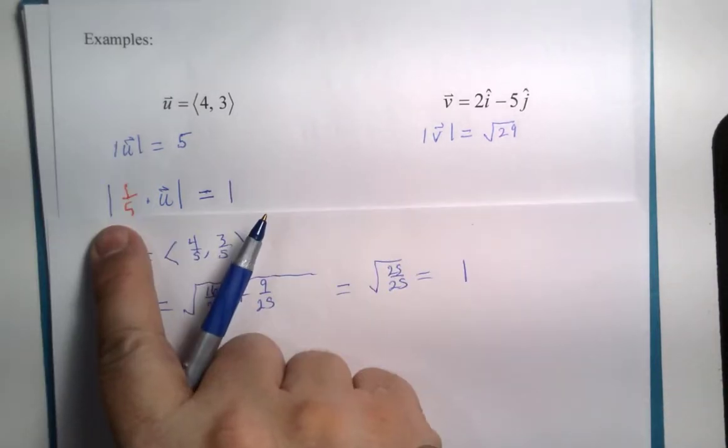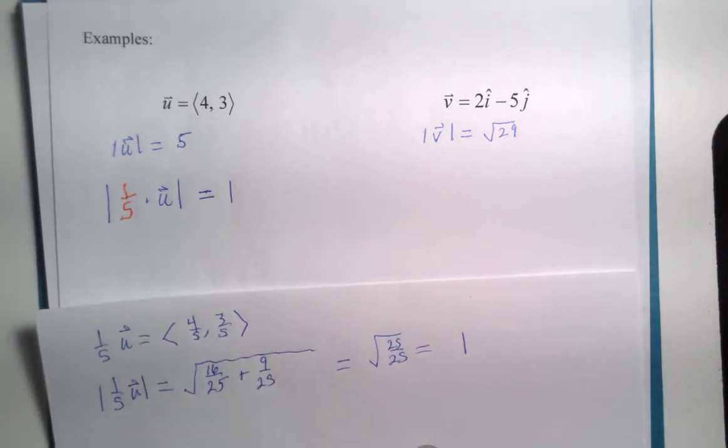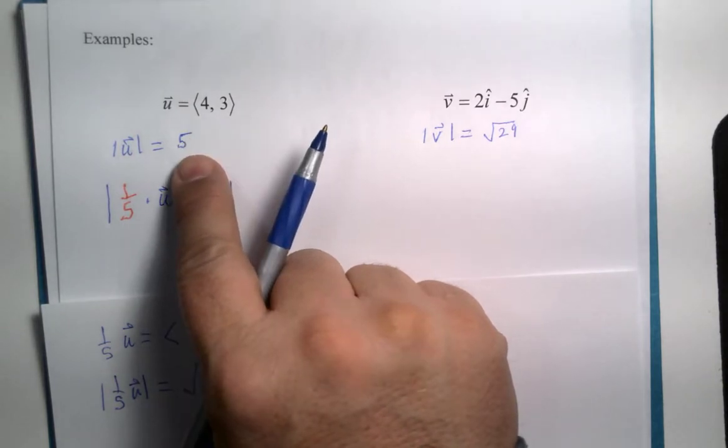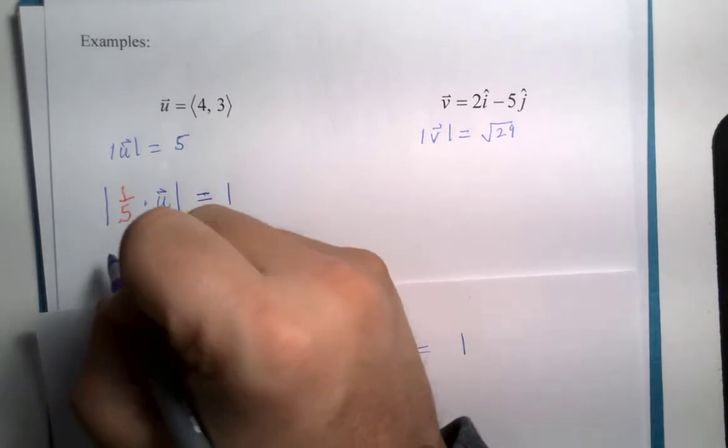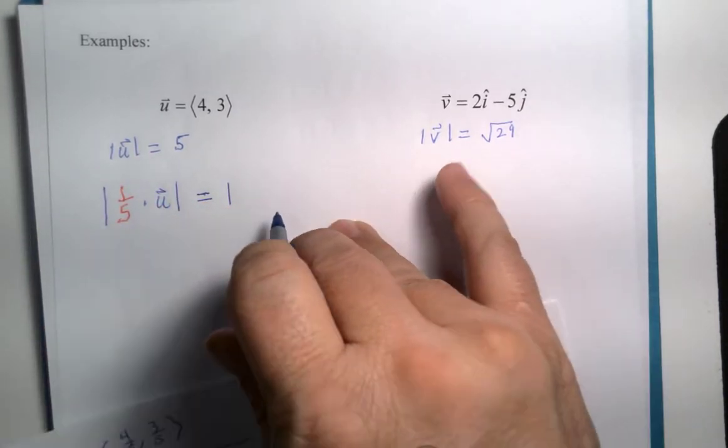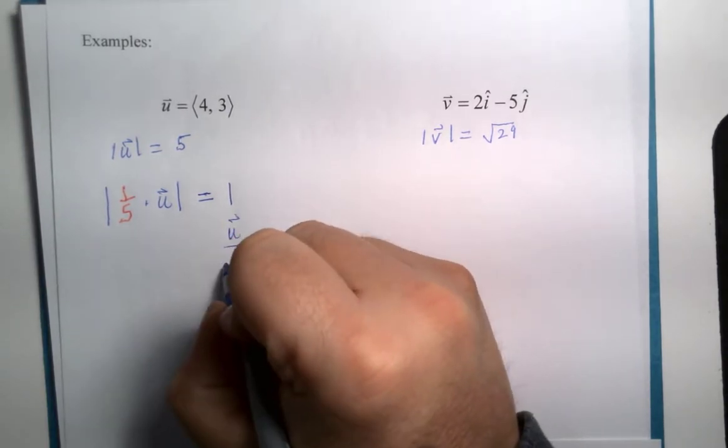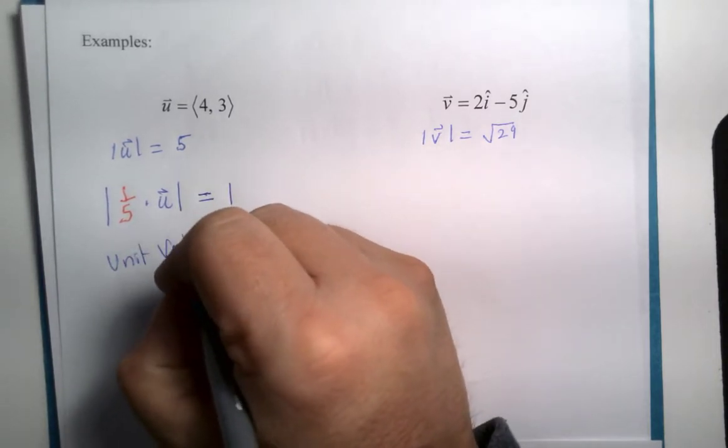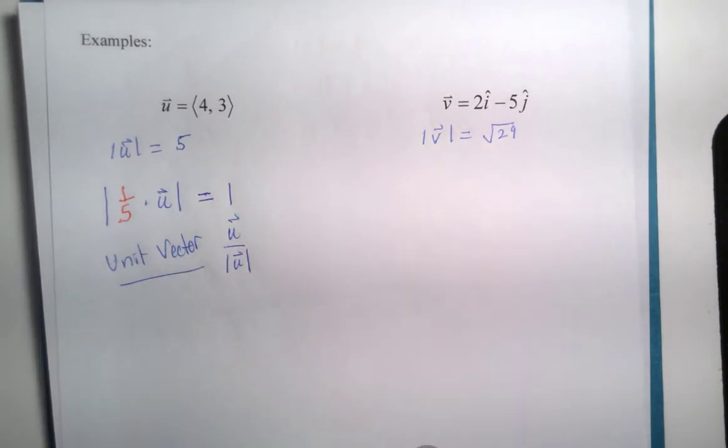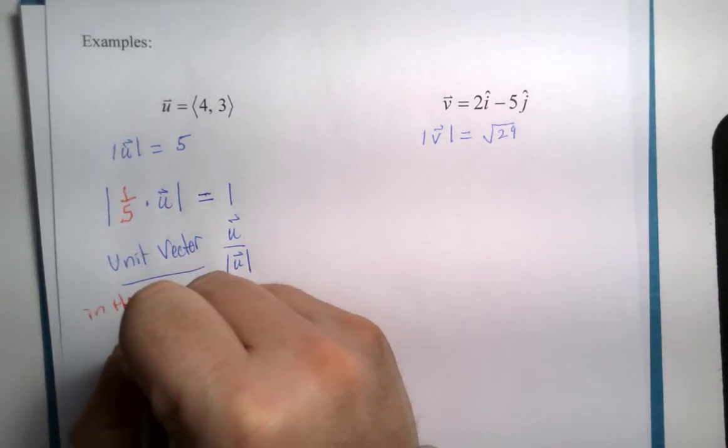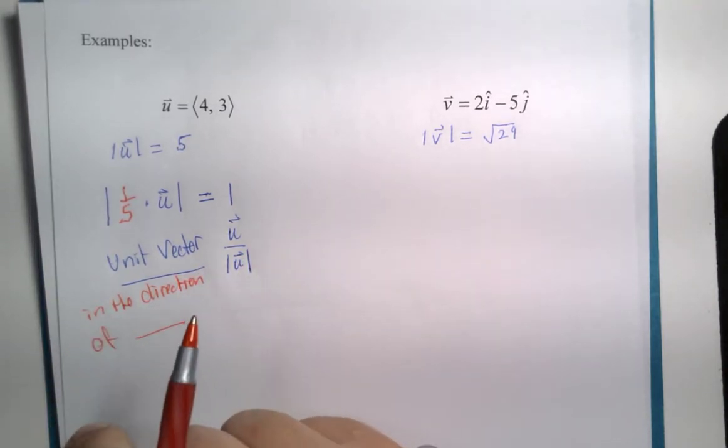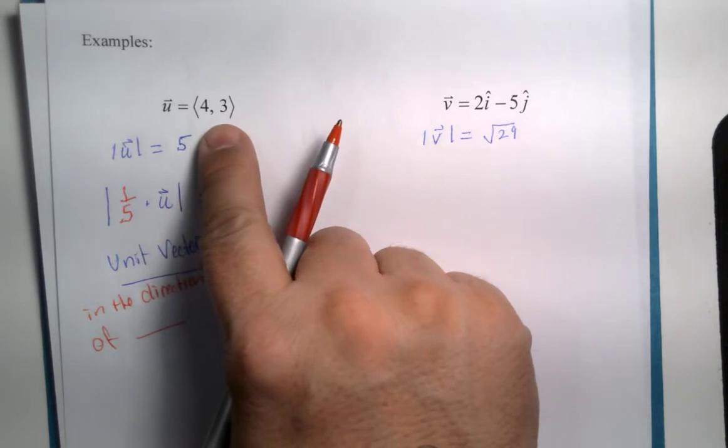So they have a name for such a vector. When you take the original vector and divide it by its own magnitude, multiply by 1 over, they call this u divided by its magnitude. It is called the unit vector. Now if you are looking for a more complete name, it is the unit vector in the direction of whatever the original vector is. So, the idea is it is in the same direction as this vector.